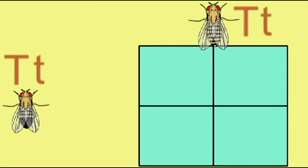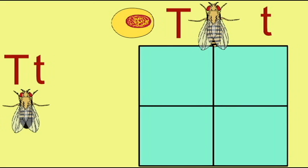When two heterozygous flies are crossed, each gamete carries one of the two alleles, but not both.